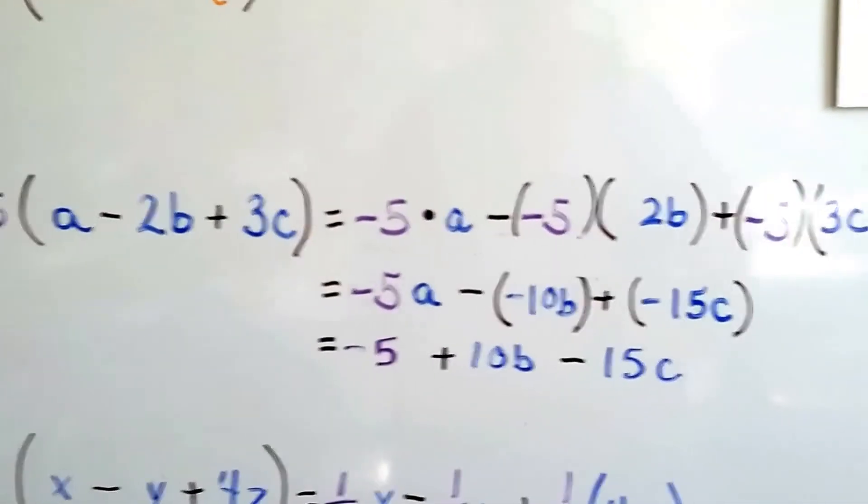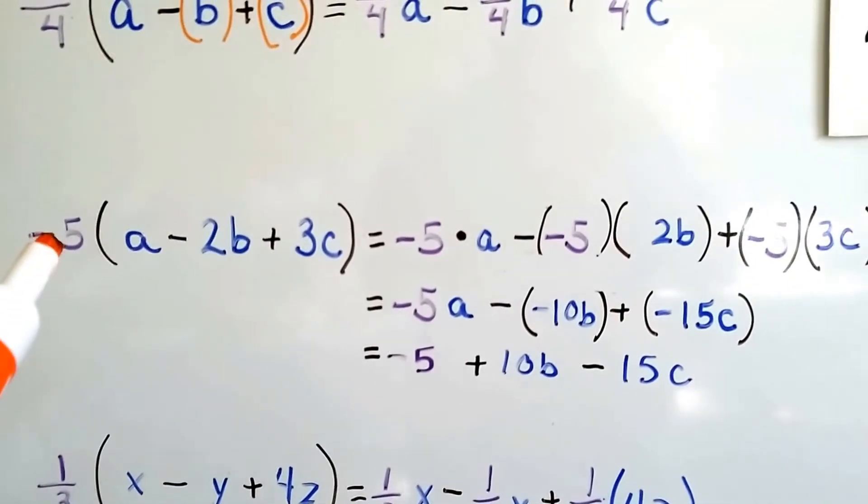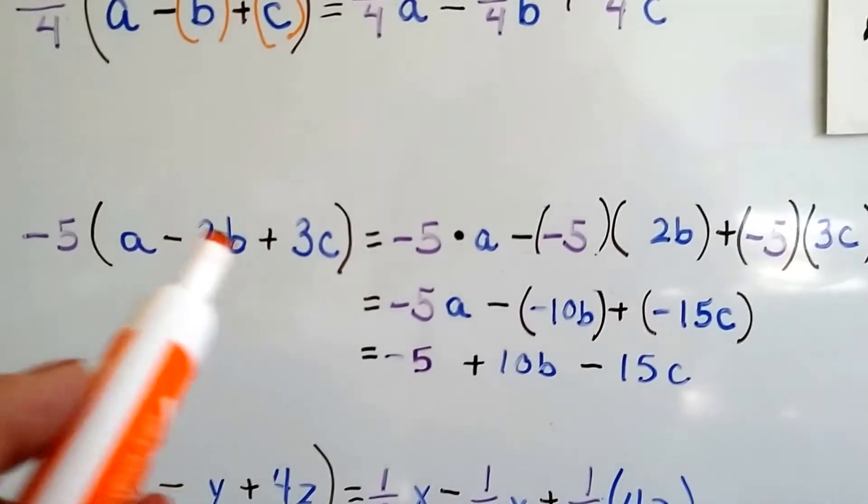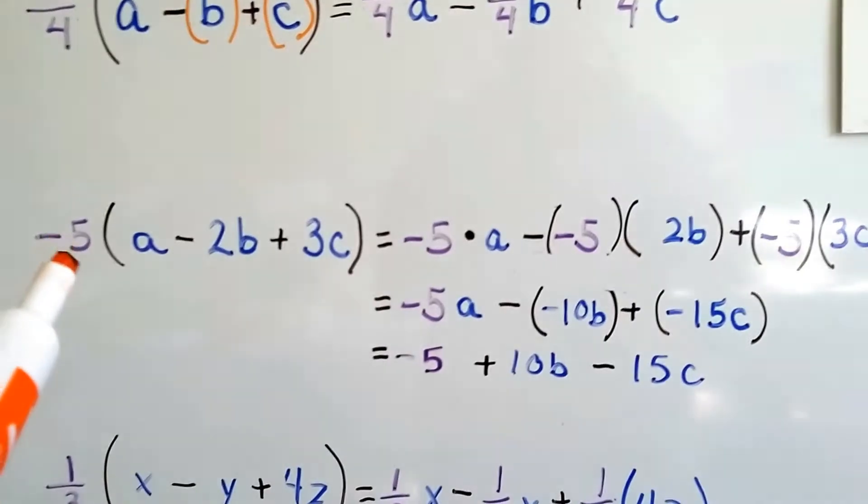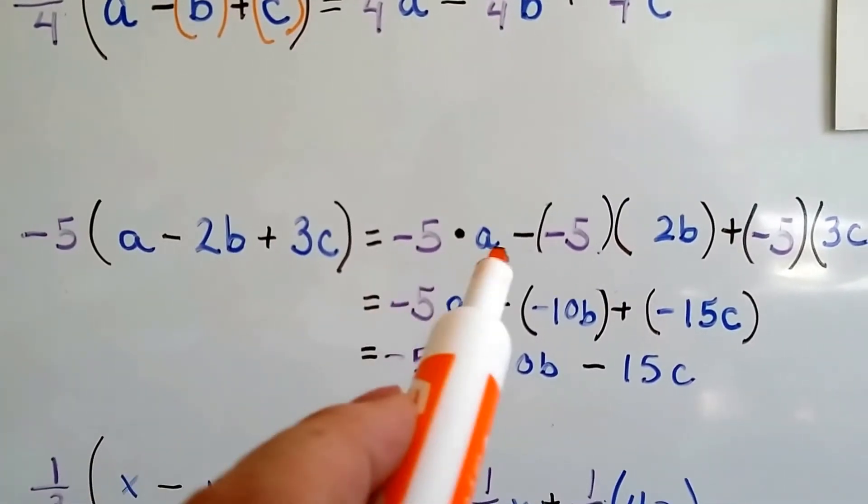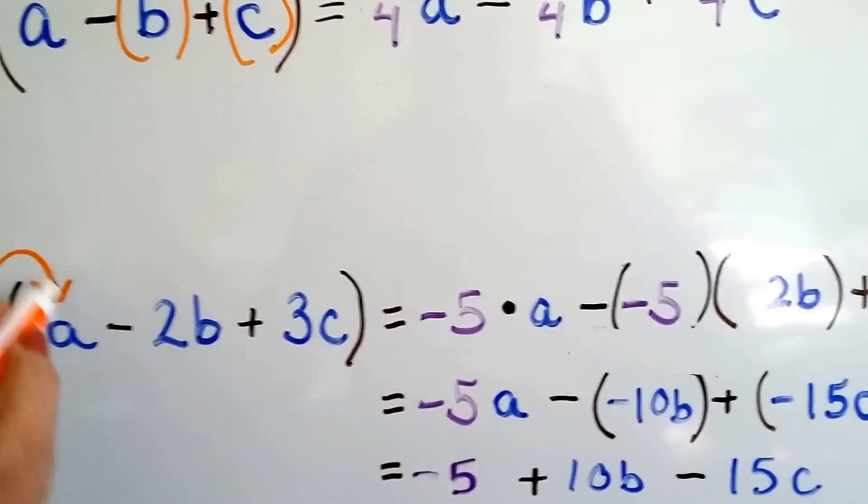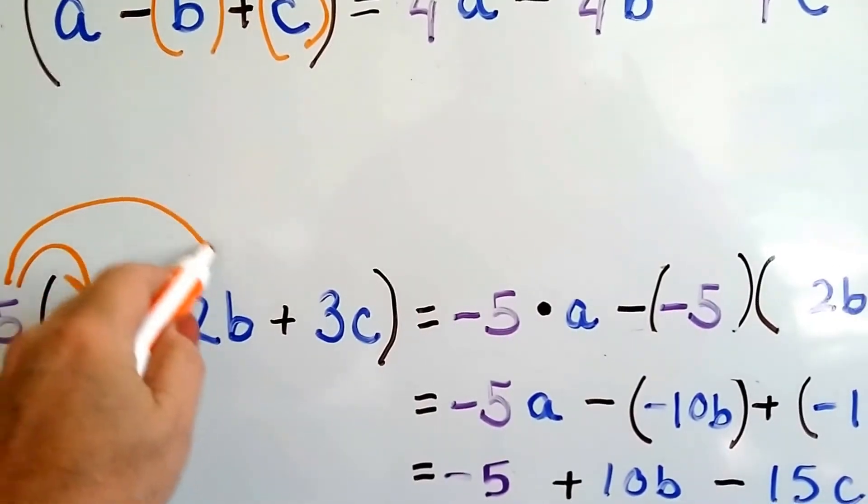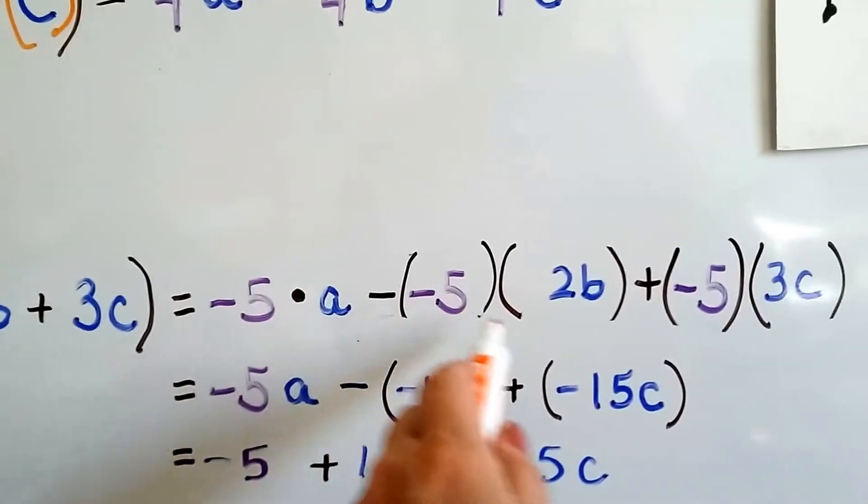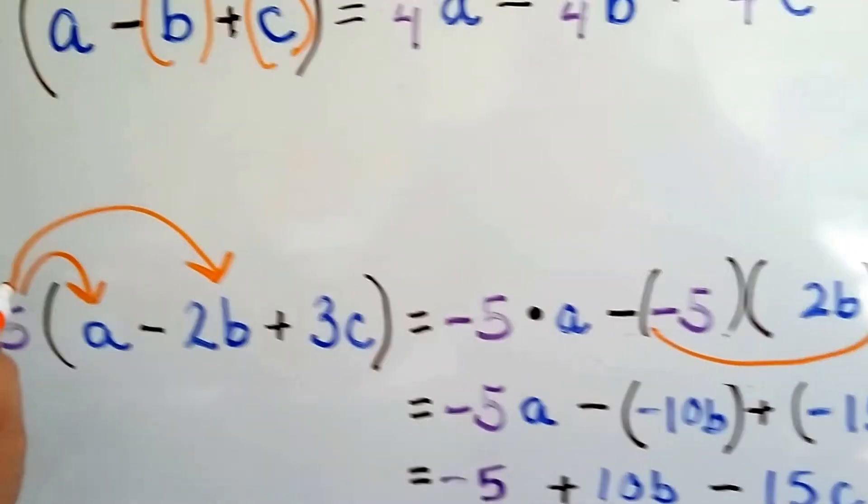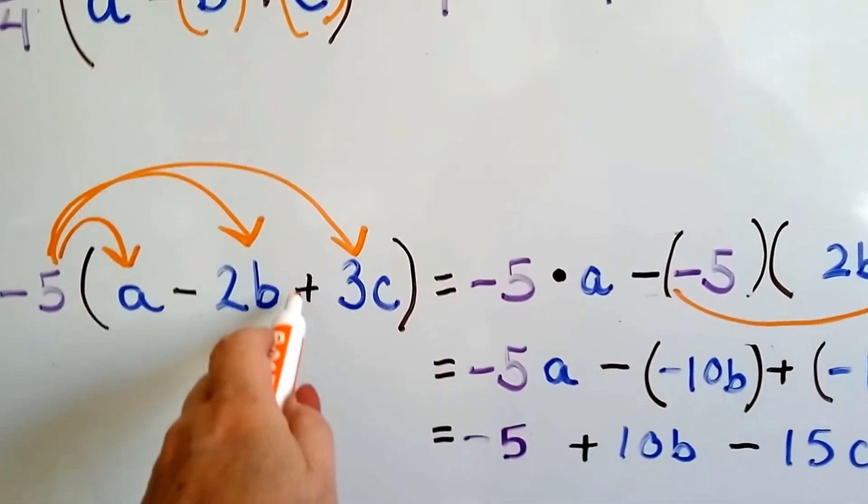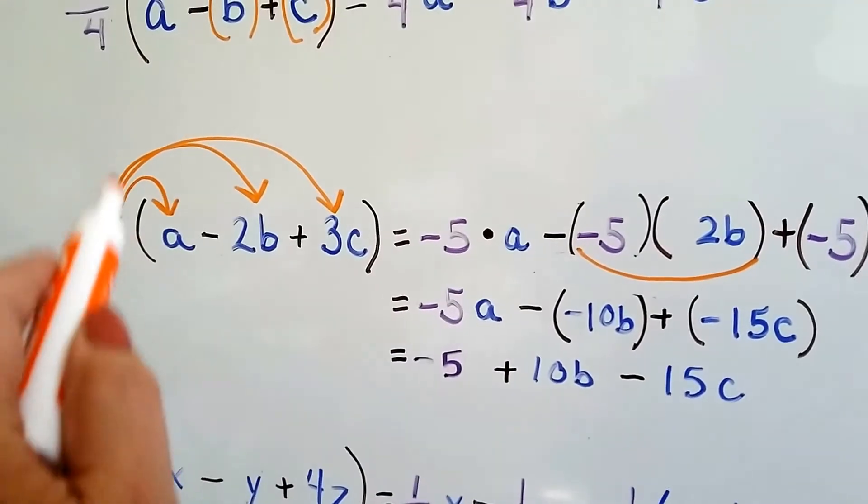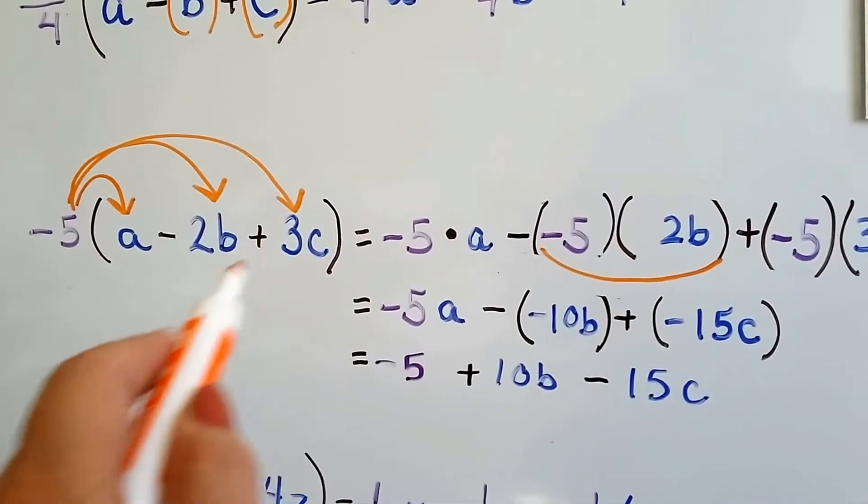Alright, let's take a look at this one. Stay with me because this one might get confusing. Now we've got a negative number and we've got coefficients and variables. Remember, coefficients are the numbers that are in front of variables. We've got negative 5 times a. So that's this one. Minus, minus negative 5 times 2b. That's this one. Then we've got negative 5 times 3c with a plus sign there. So here's our plus sign and here's our negative 5 times 3c. See how it went to the first one, to the second one, to the third one, and we kept our minus and plus signs in between them?